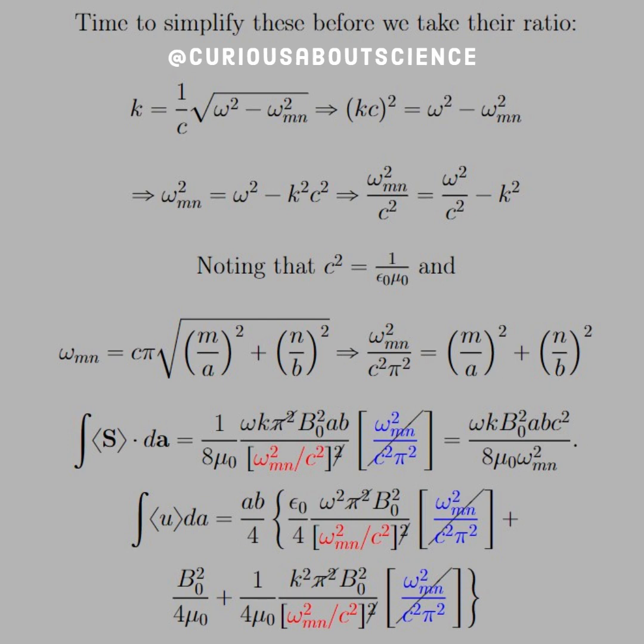So now that we have this setup here, we can go ahead and simplify down quite a bit. So for the integral of the pointing vector, we have the m over a and then n over b, both squared.